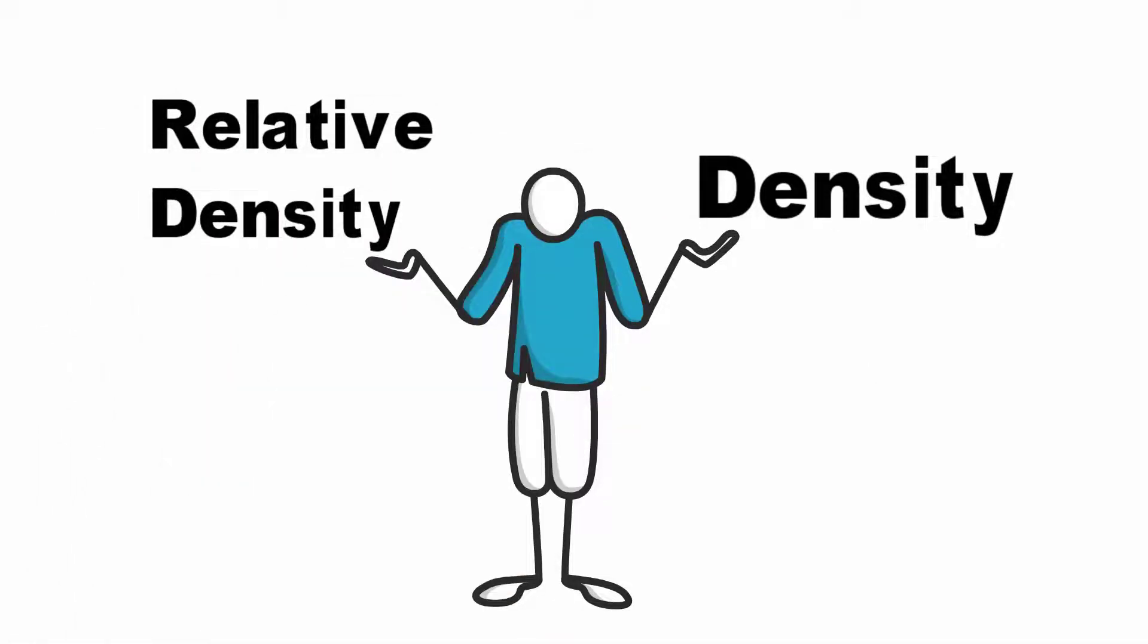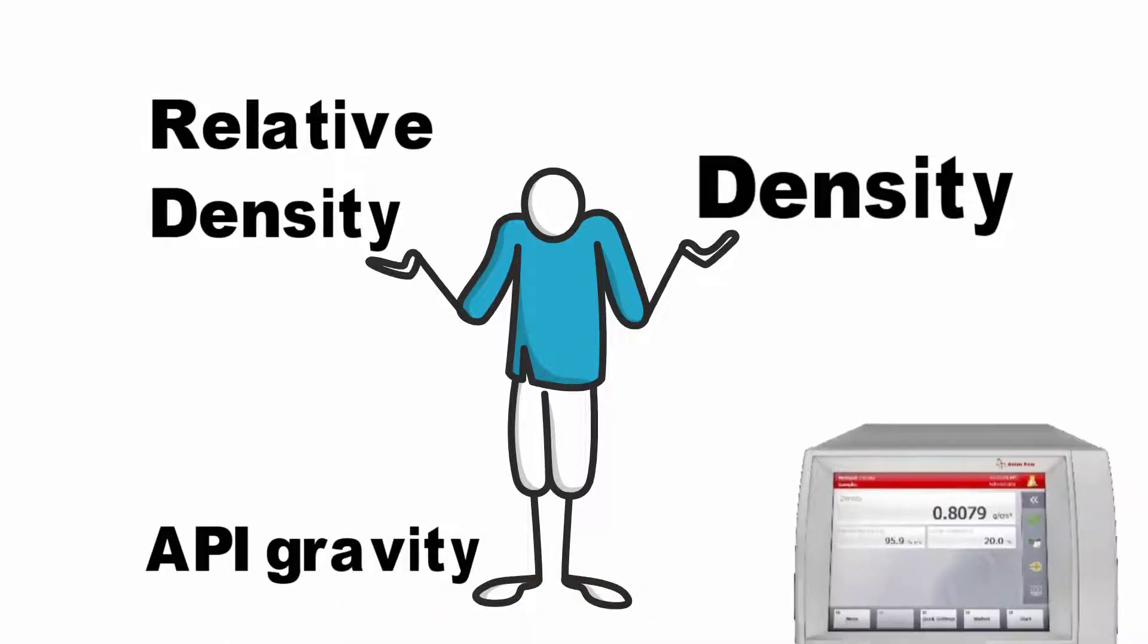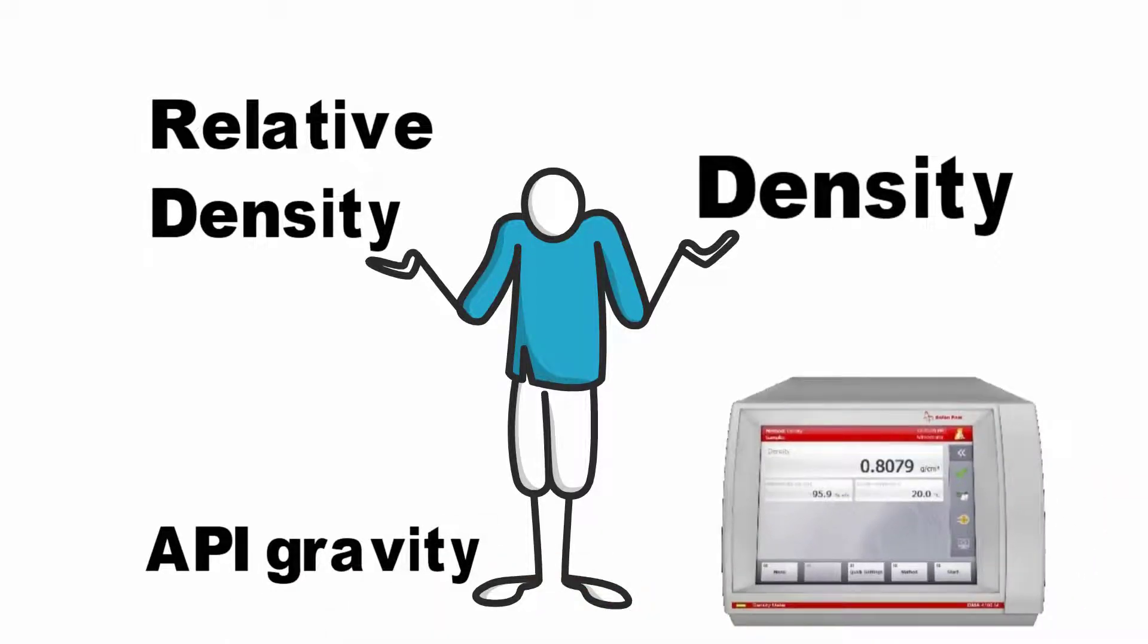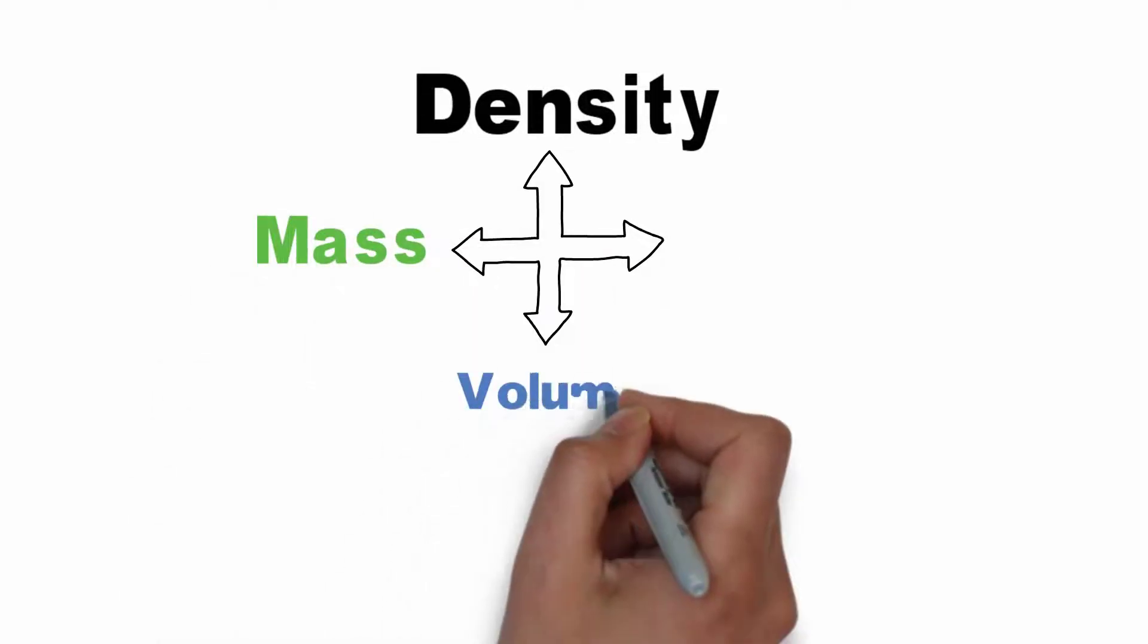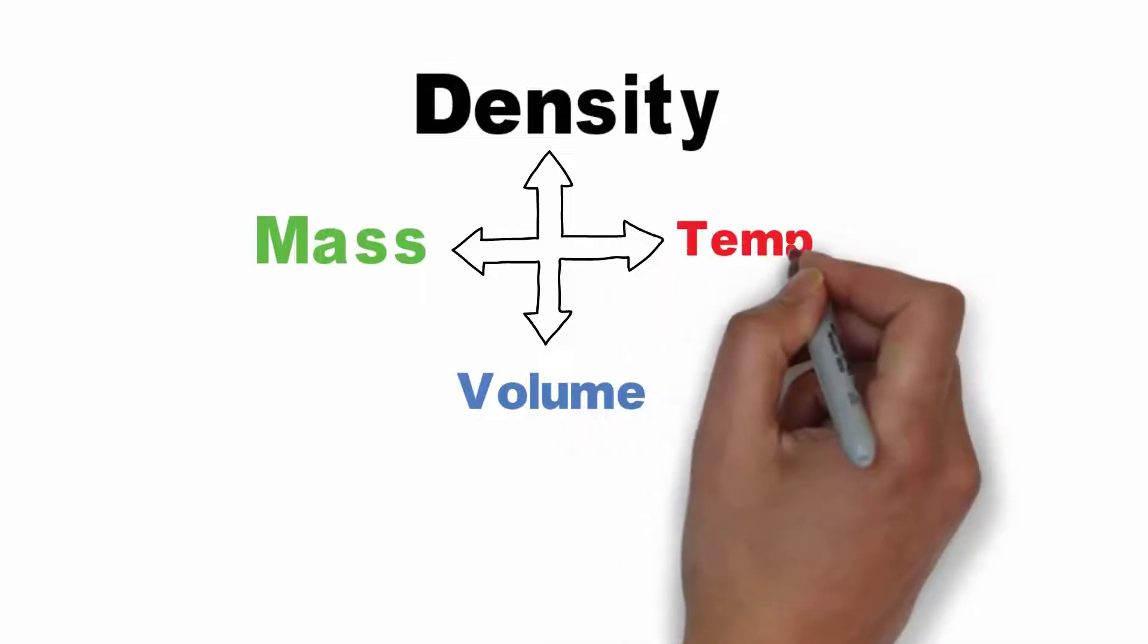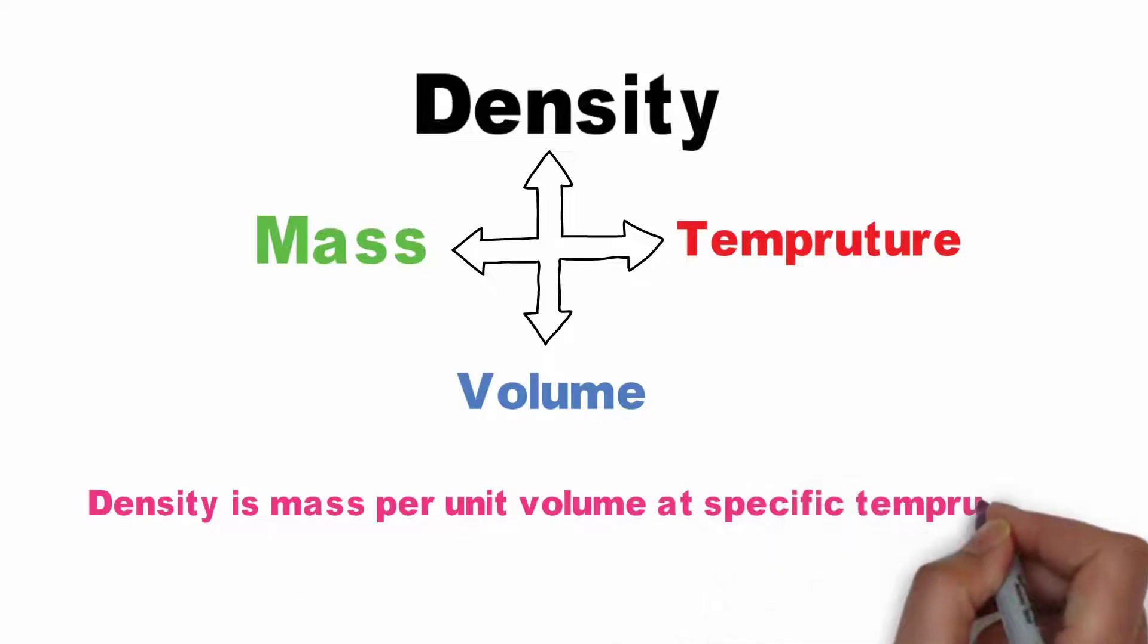So let's find out what are these. When it comes to density, you need to remember these three words: mass, volume, temperature. Density is mass per unit volume at a specific temperature.